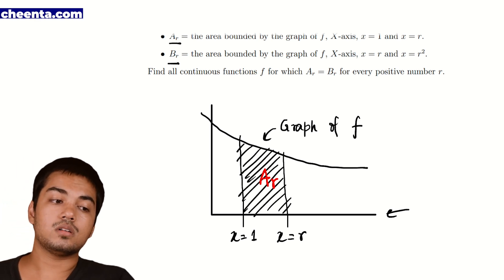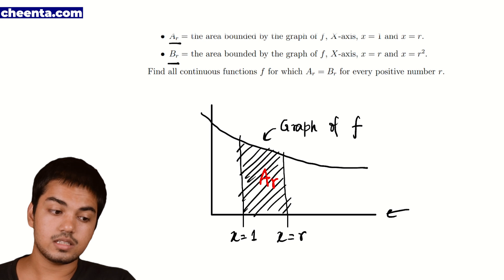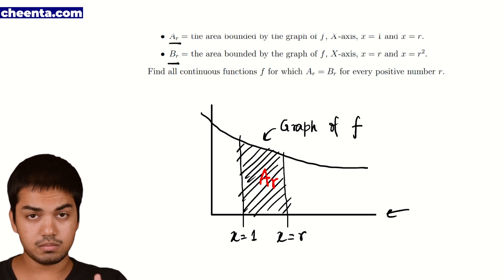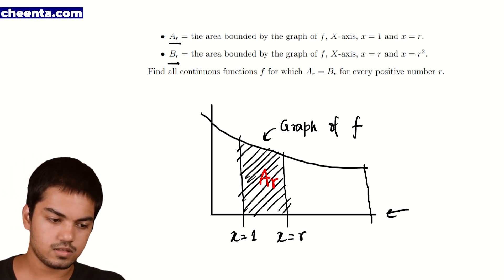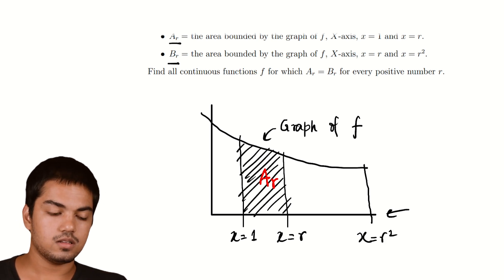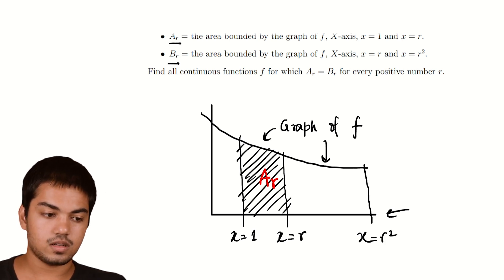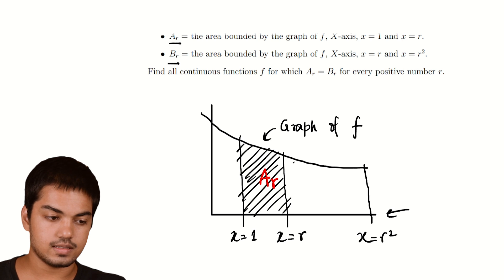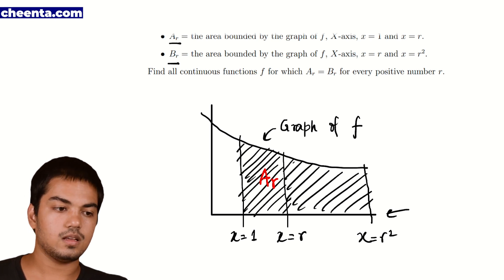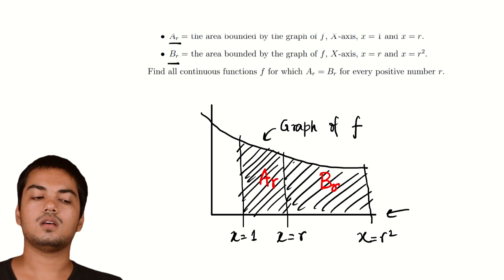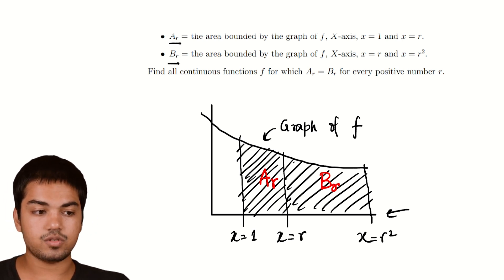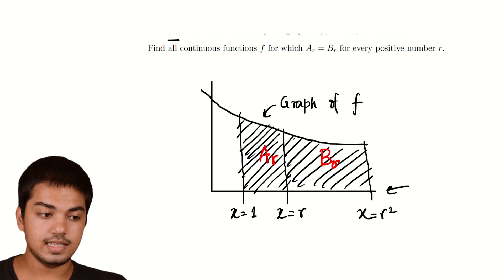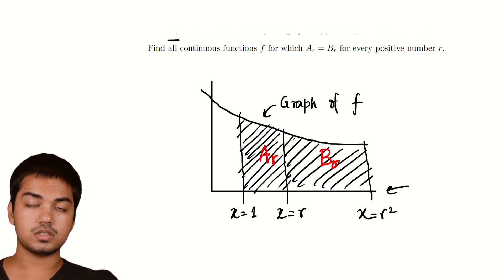And B(R), similarly, is the area bounded by the graph of F, the x-axis, x equals R, and x equals R-squared. x equals R-squared is a much further away vertical line. So B(R) is the area between x equals R and x equals R-squared under the graph of F. The problem asks us to find all continuous functions F for which A(R) equals B(R) — that is, these two areas are equal for every positive real number R.